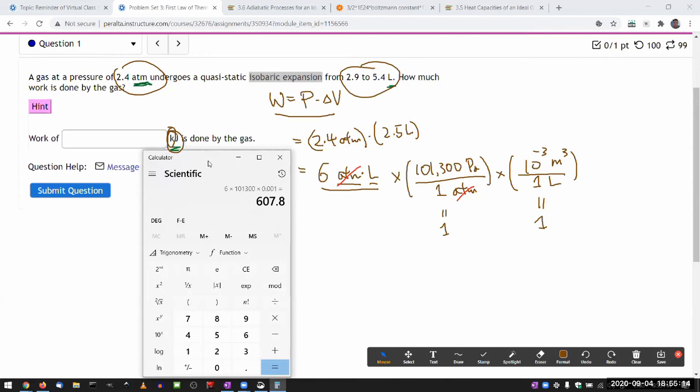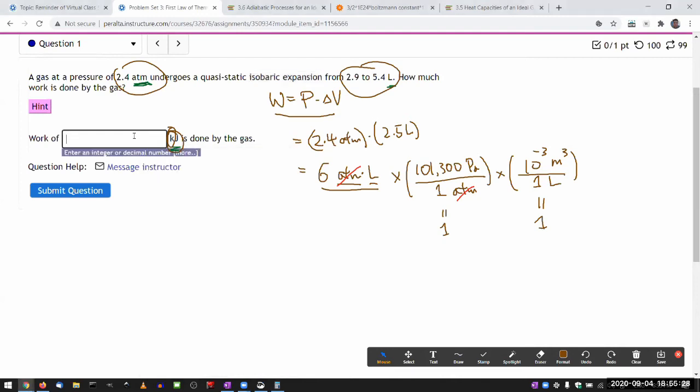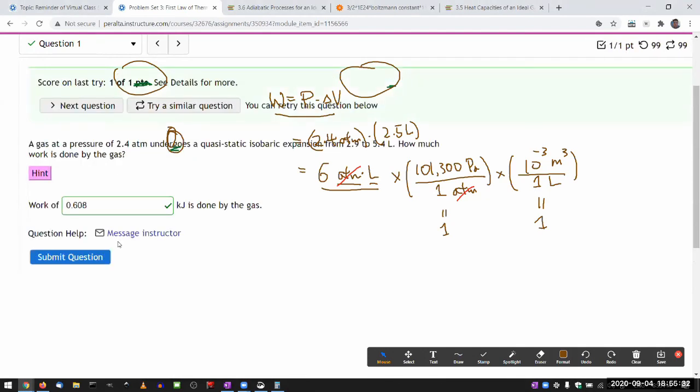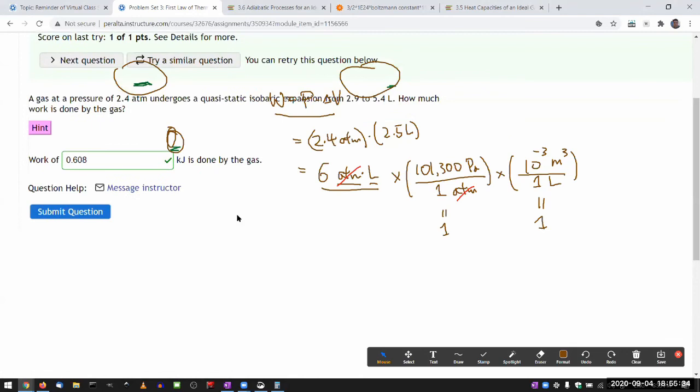Somehow I thought it would be larger. Let me divide it by another 1000. That seems a little bit - divided by 100 by mistake. Okay, 0.608, seems small. That's what the number I got, 0.608. I guess it's correct. So that's one method.